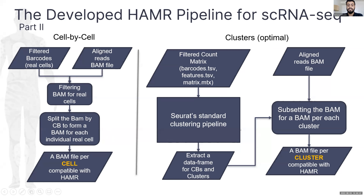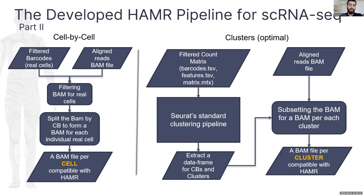In the cluster-based route, we use the count matrix to run the SEURAT standard clustering pipeline and extract a data frame of cell barcodes and their corresponding clusters. We then subset from the BAM file generated by STARsolo to have a BAM file for each cluster to input into HAMR. The cell-by-cell method is technically possible, but single-cell RNA data lacks sufficient depth per cell for HAMR to produce reliable results. This is why we consider cluster-based analysis optimal, and it is also more biologically interesting since we are comparing different cell types and states.